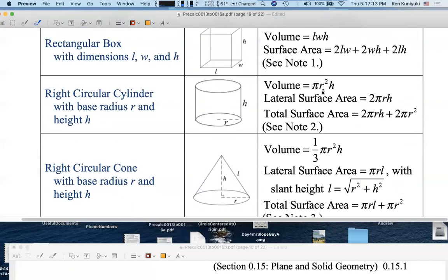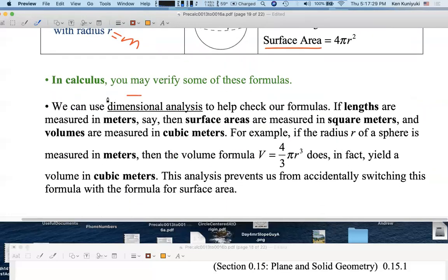Take a look at the volume of the cylinder here. Pi is a constant. R squared is in square meters. H is in meters. Together you have cubic meters, and that would be reasonable for the volume of the cylinder. Some people call that dimensional analysis to make sure you have the right exponents.